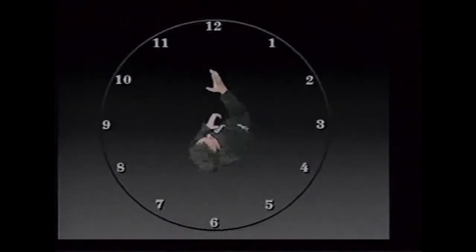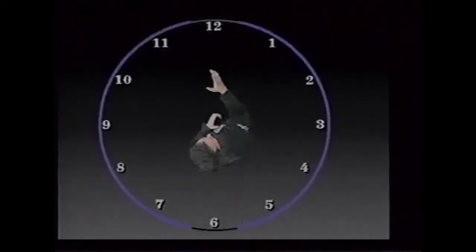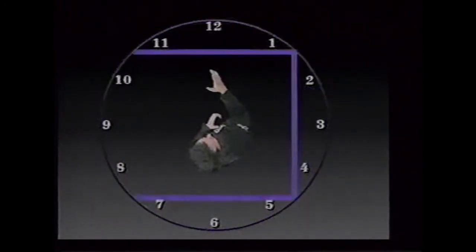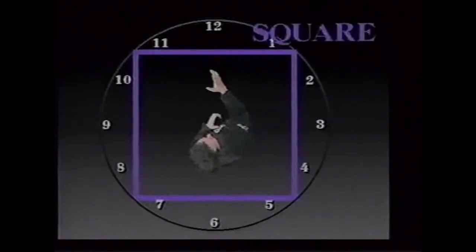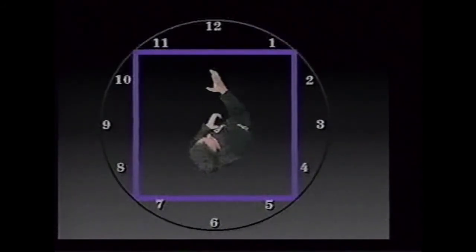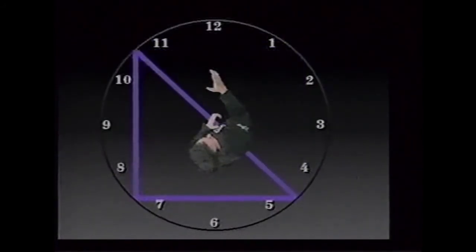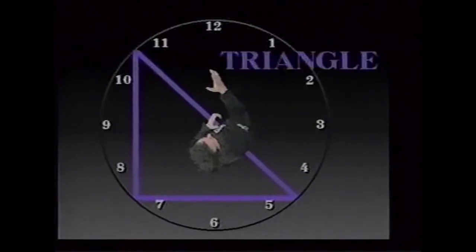Connect all of the numbers with an arc and you will have a circle. Draw four lines within the clock circumference and you will develop a square. Divide the square in half from corner to corner and you will form two triangles, which could be condensed to one.